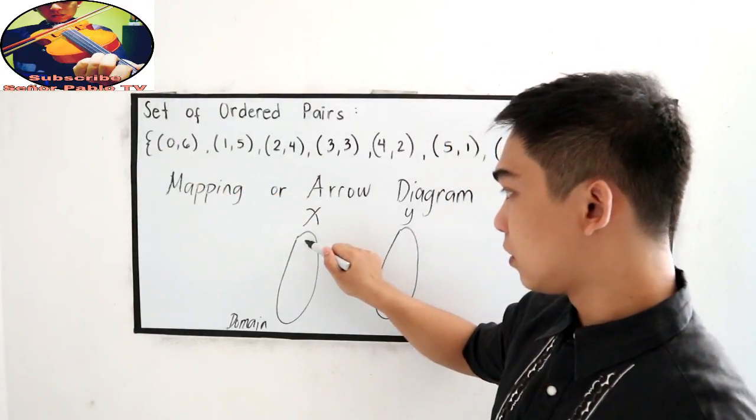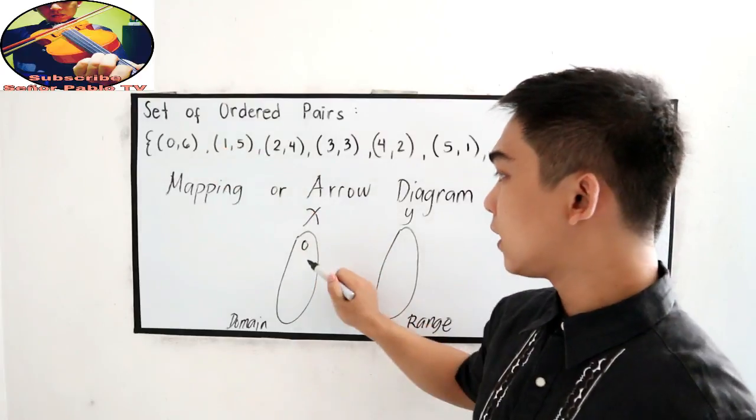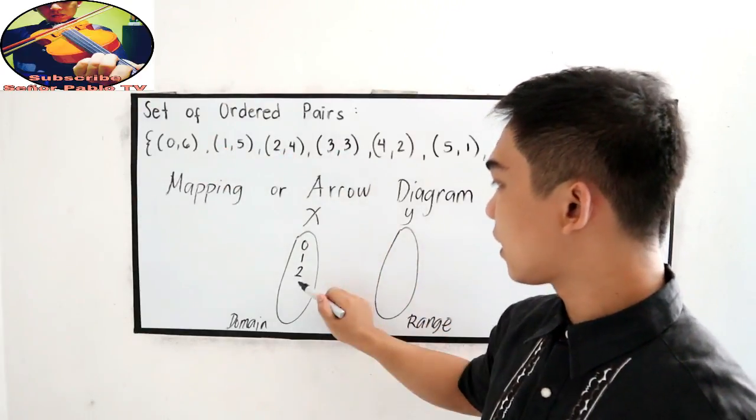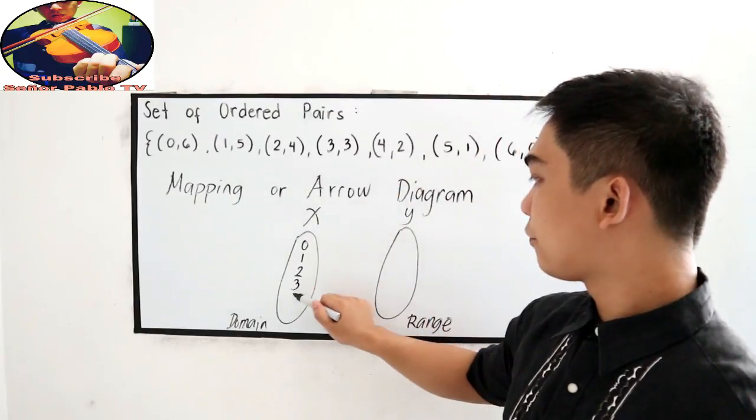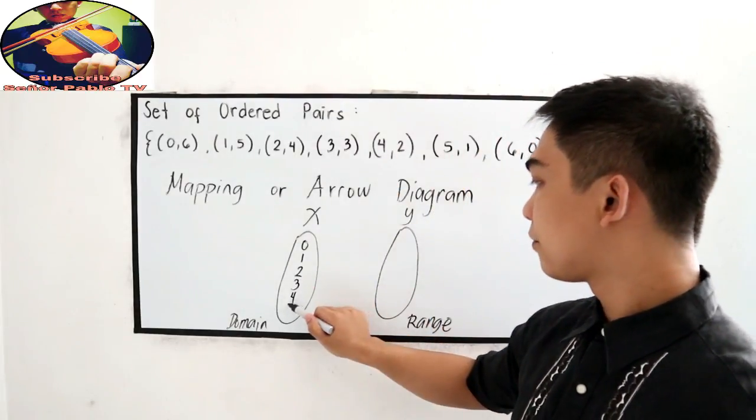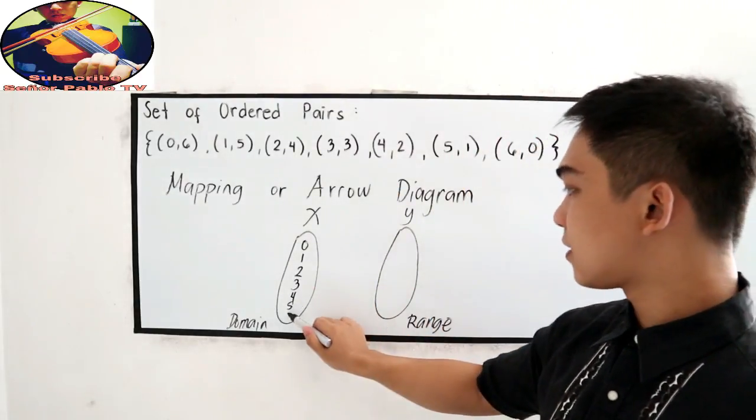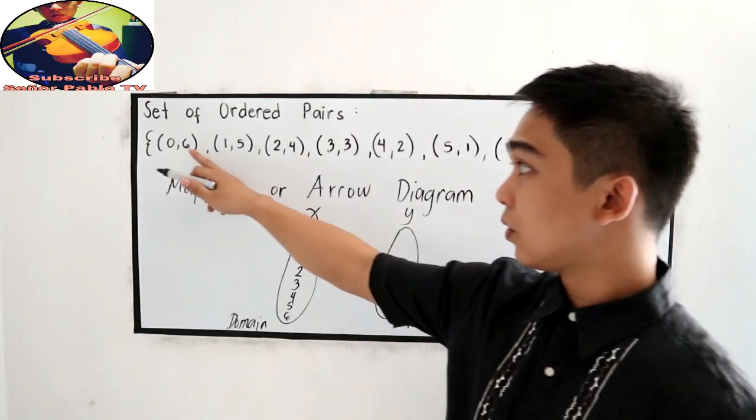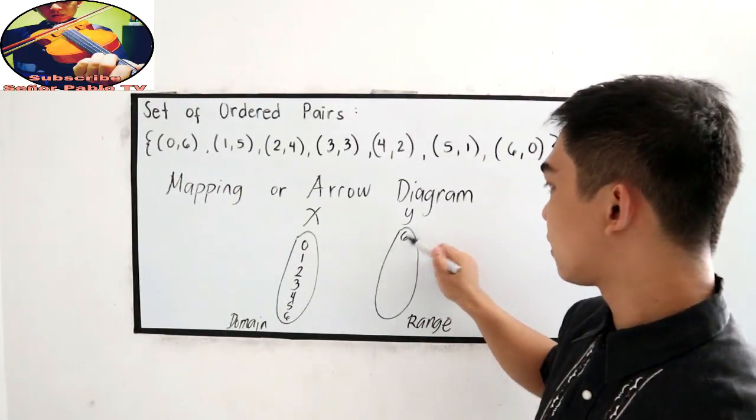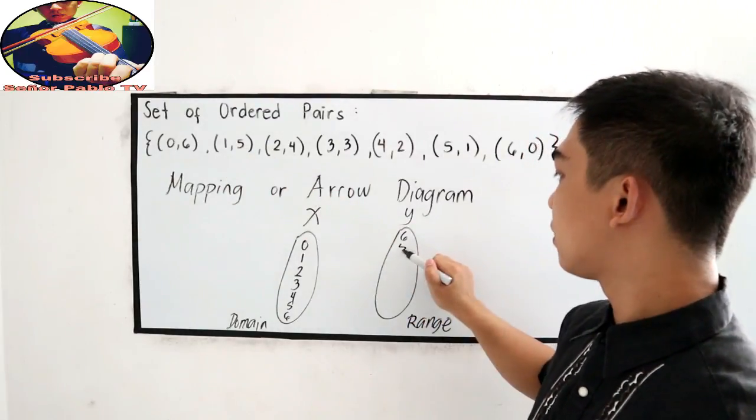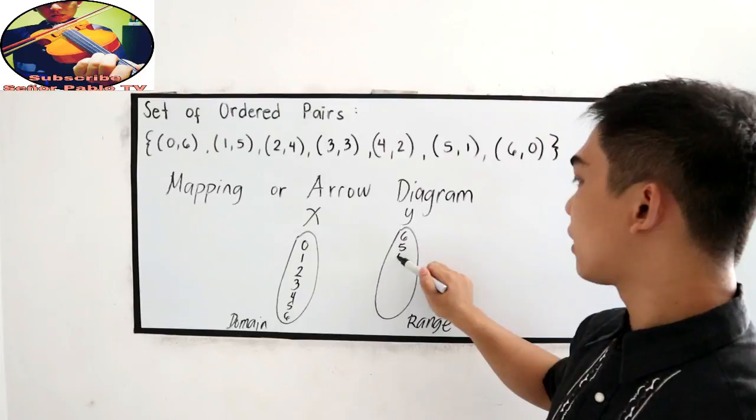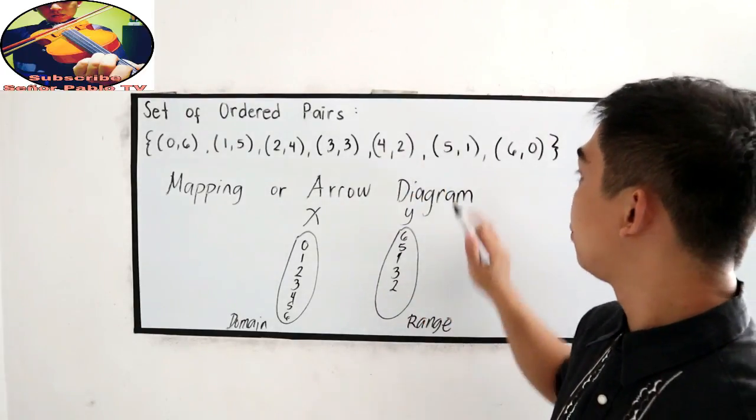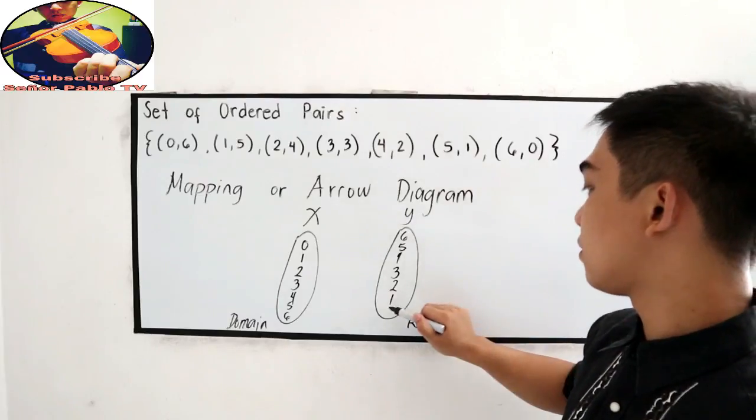Now, let us write all our abscissa or our domain. So, 0, 1, 2, 3, 4, 5, and 6. And of course, our range, we have 6, 5, 4, 3, 2, 1, and 0.